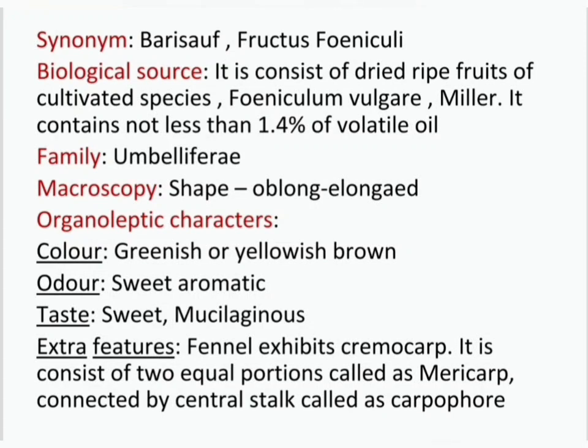Macroscopy — shape: oblong, elongate. Organoleptic characters — color: greenish or yellowish-brown; odor: sweet, aromatic. Miscellaneous extra features: fennel exhibits cremocarp. It consists of two equal portions called mericarp connected by a central stalk called carpophore.